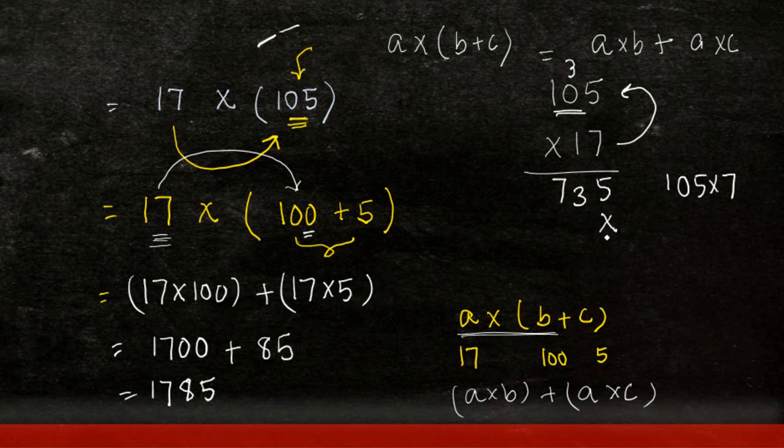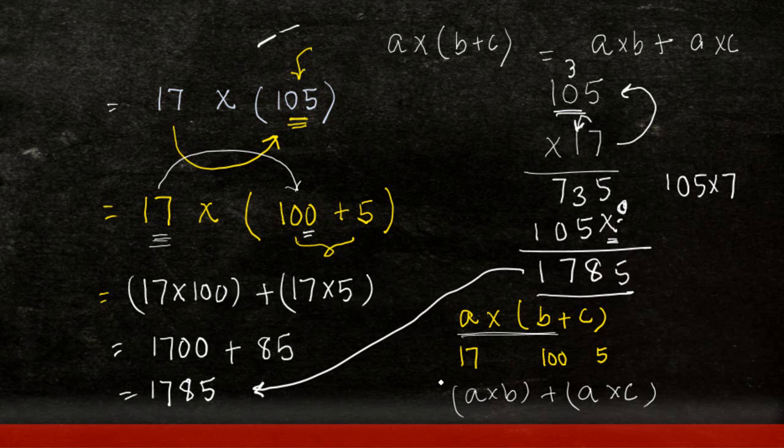And then, when you apply this cross sign over here, what does this mean? We are actually just adding a 0. Which is why? Because we are moving from 1's place to 10's place. And then, you put in 105. This gives you 1785. Which is nothing but the answer that you have got.